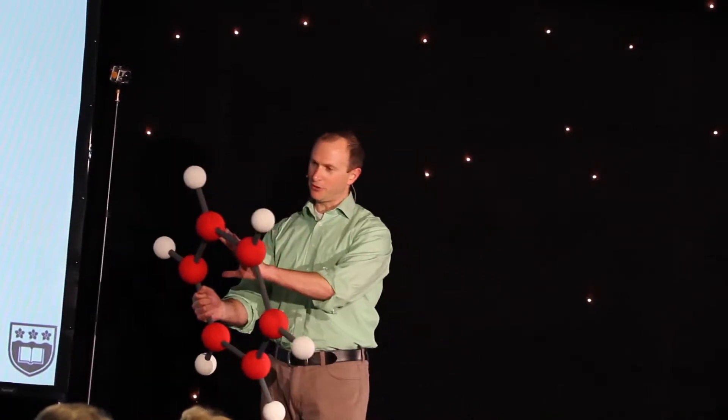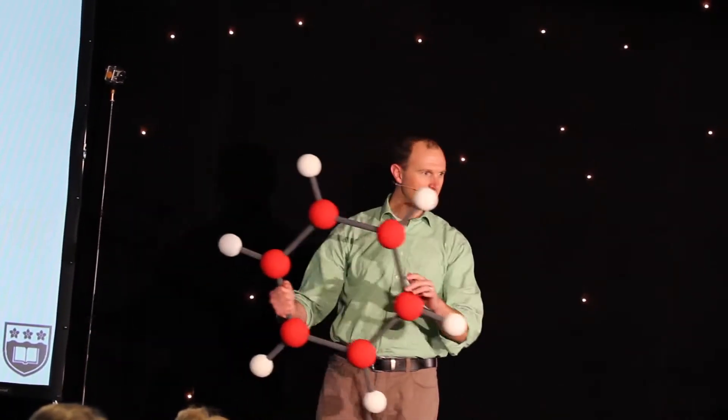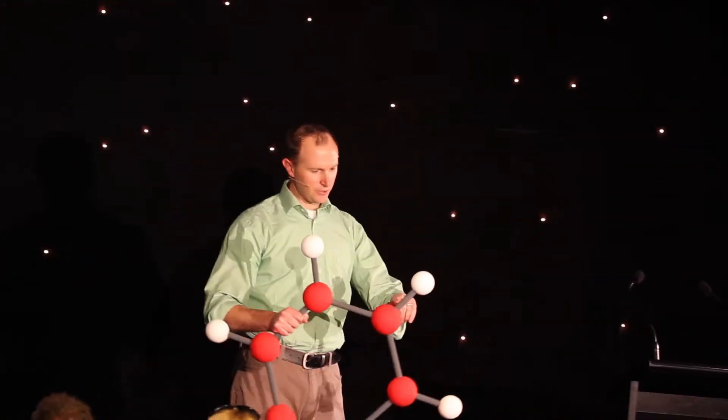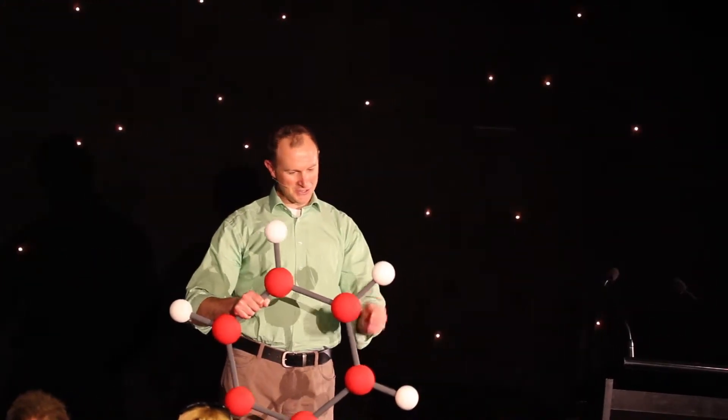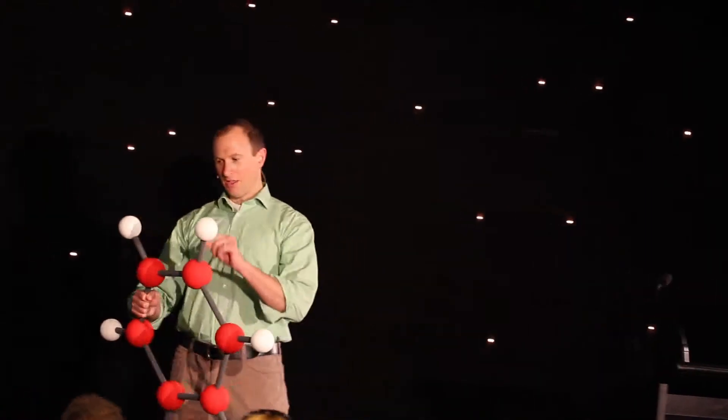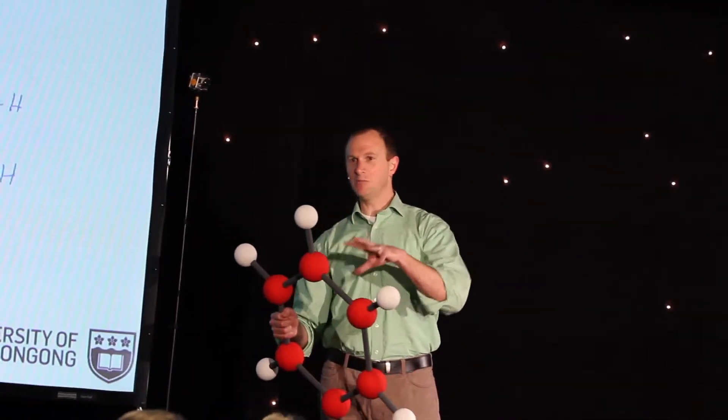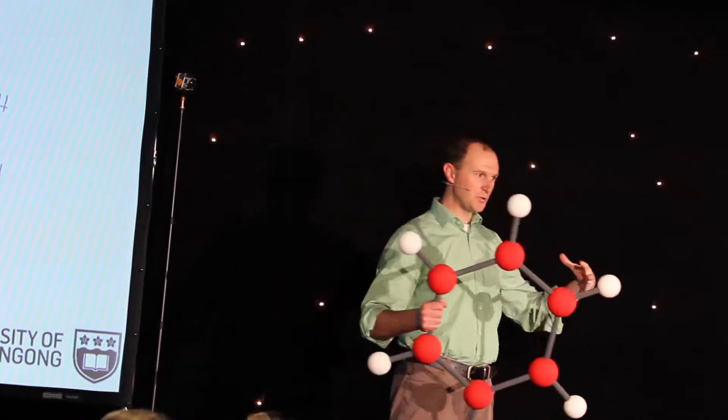So what is it made up of? Well, it's got six carbon atoms, they're shown in red, and it's got six hydrogen atoms, they're shown in white, and it's got these painted sticks from Bunnings. Those are the bonds, right? So they're the things that keep the atoms in the molecule stuck together.